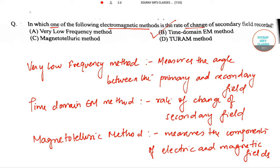And the last one is the Turam method. This Turam method actually is a phase measuring system. So we have learned about all the methods and what they are used in measuring. And we also have the correct option for this particular question.